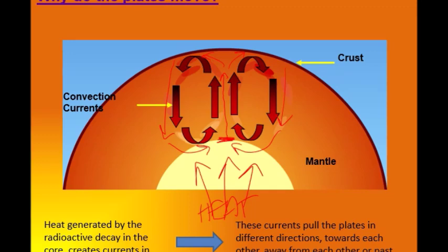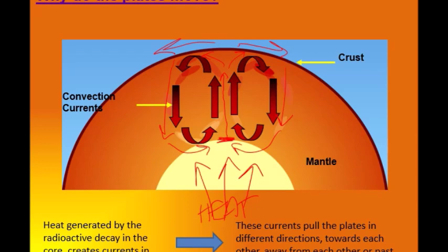As these convection currents happen in the mantle, they pull the crust above, so the plates are pulled apart. Think back to the swimming pool with two lilos — if someone underneath the water is kicking and splashing around, that's going to make the lilos move apart. That's how convection currents make our crust move apart.